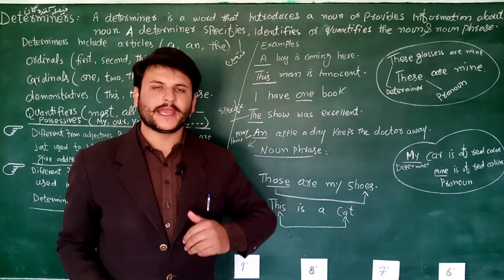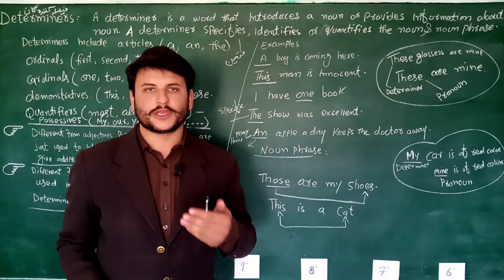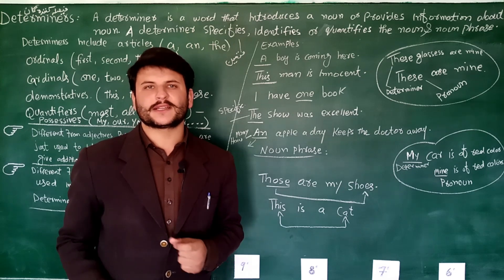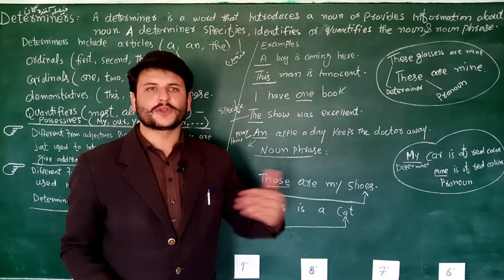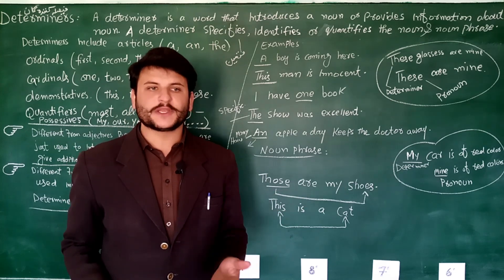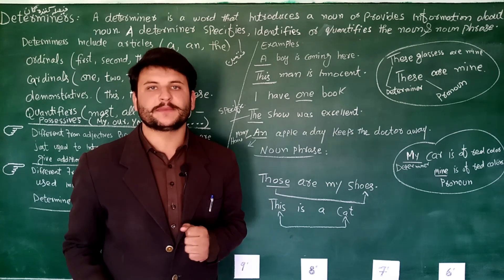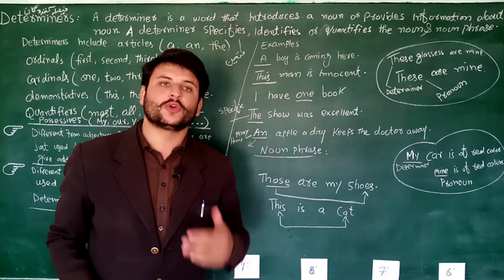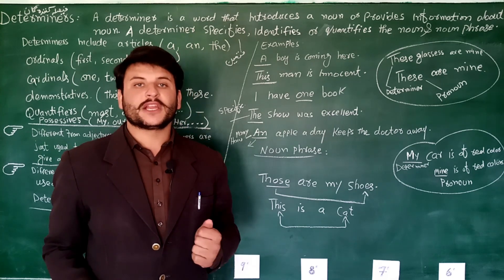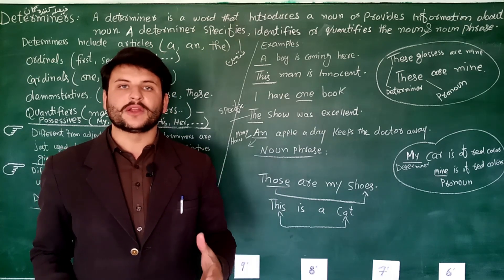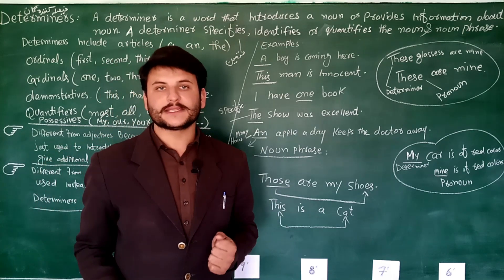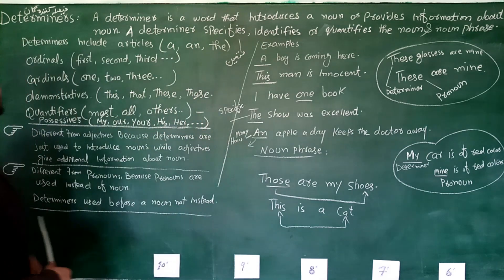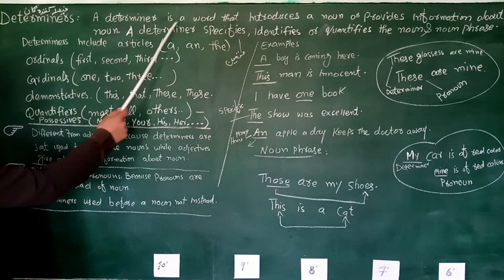Most of the grammarians and zuban ki mahirin - determiners ko ek unit consider karte hain. Ziyada tar focus yeh nahi ke yeh ek part of speech hai, but functionally - functional English mein jab istimal karte hain hum, to environmentally jab kisi statement mein yeh istimal ho, sentence mein yeh istimal ho determiner - to wohi jagah par jis ka istimal ho, usi istimal ko madnazar rakhte hue is ko determiner ka naam hum de sakte hain.